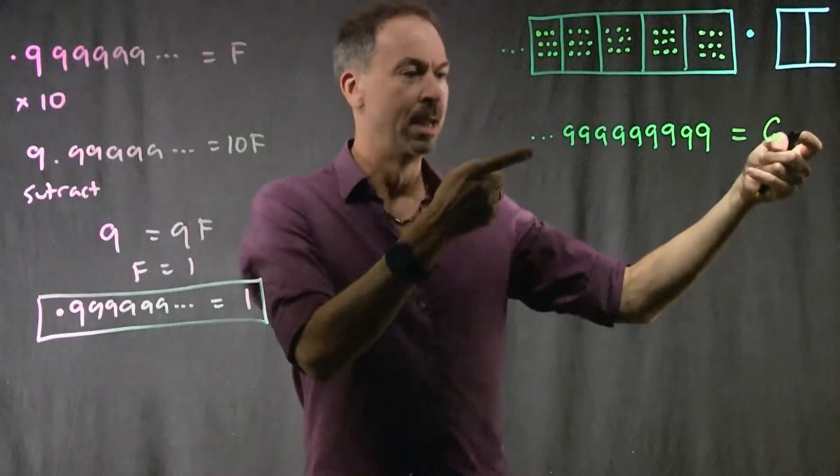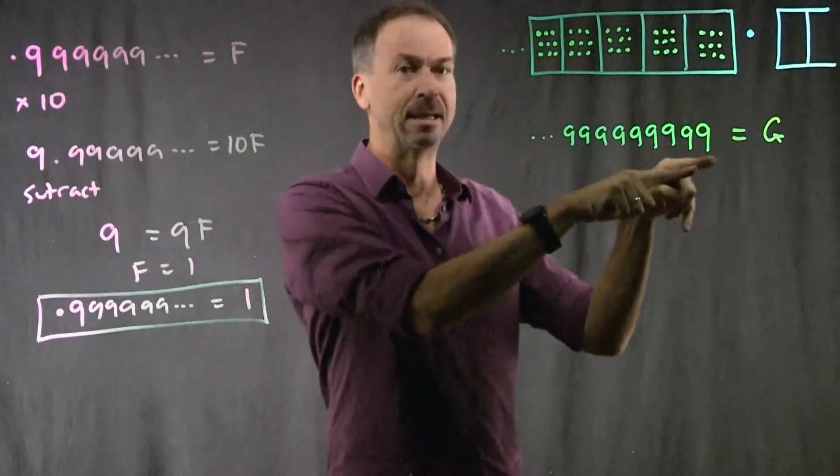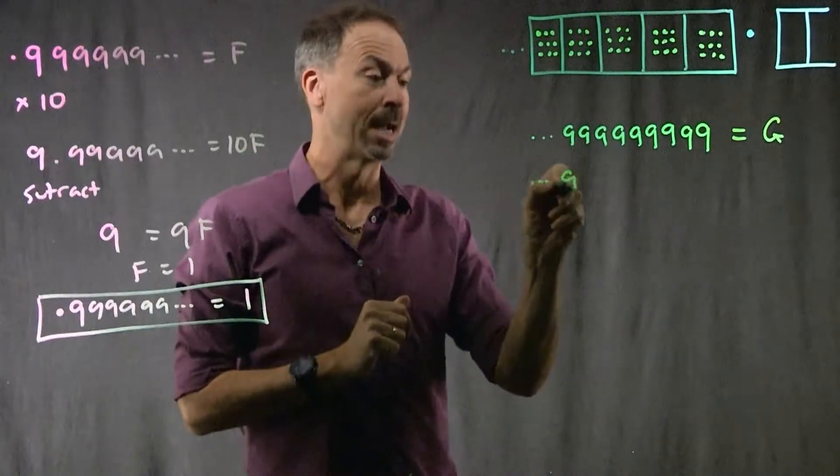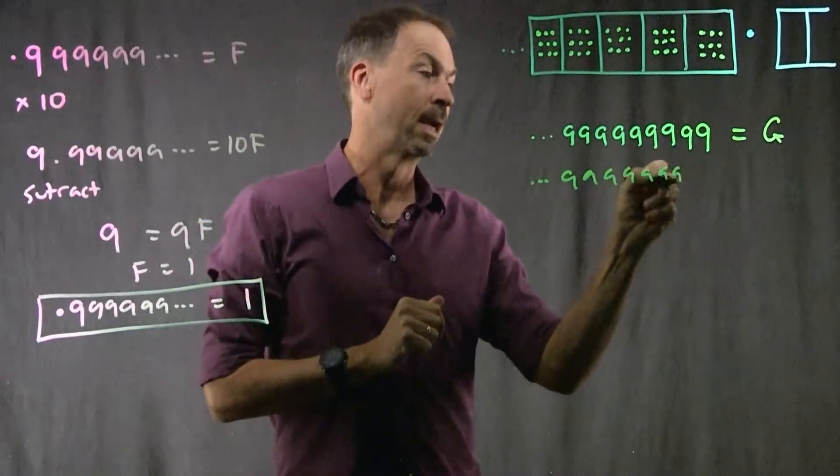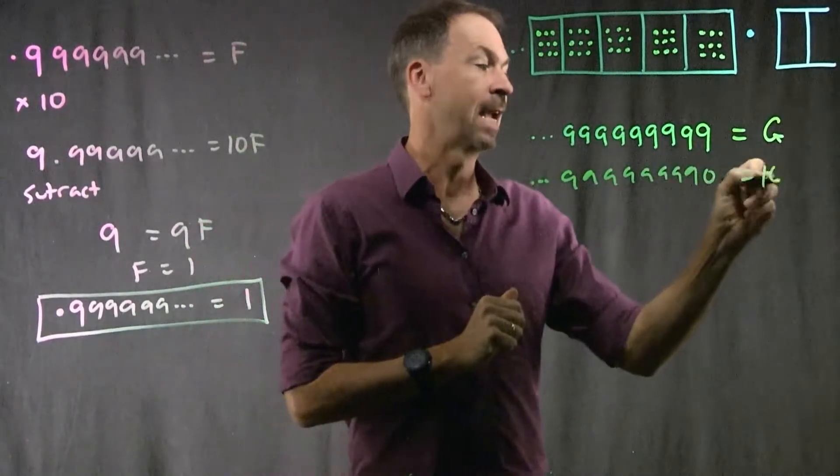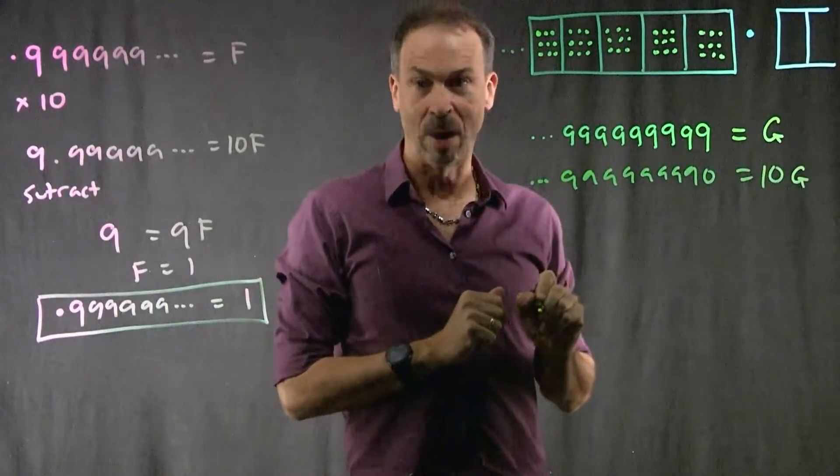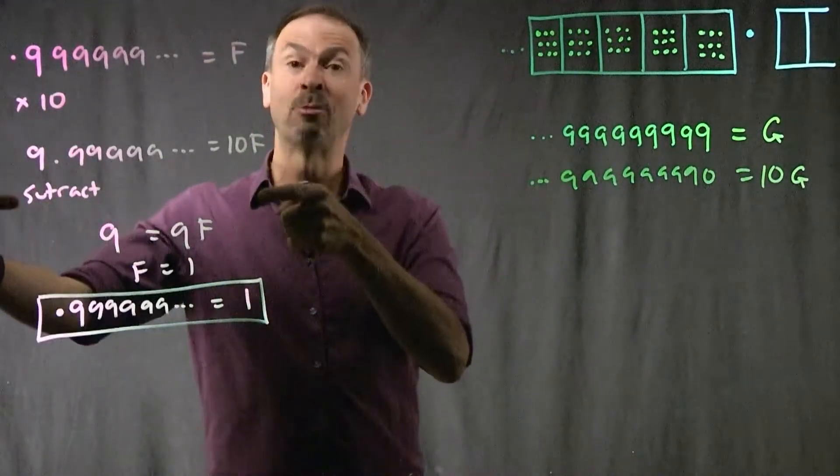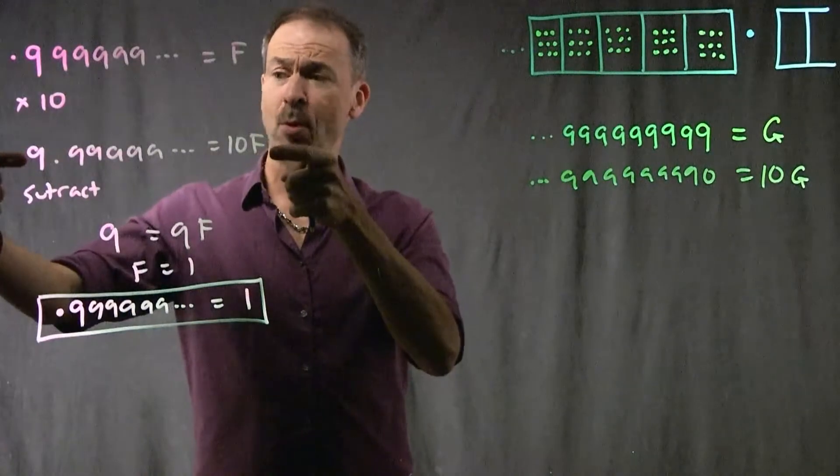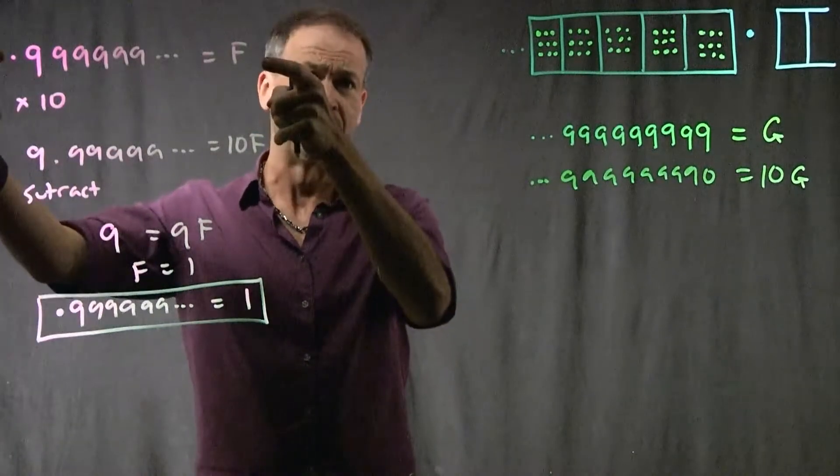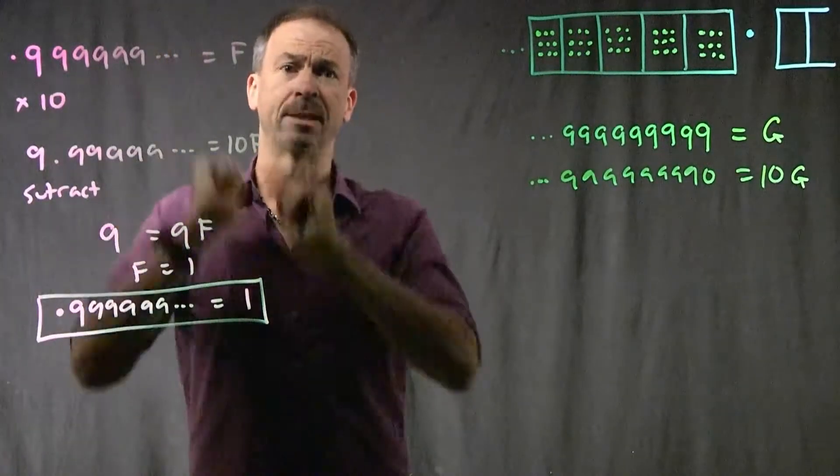I shall multiply Georges by 10. So it's a number, a whole bunch of nines, ends in 9, times 10, will give you a whole bunch of nines that end now in 9, 0. That'll be 10 Georges. Great. Next thing we did, we subtracted them. I subtracted 9.999 forever, take away 0.999 forever, and got 10 F minus 1 F.